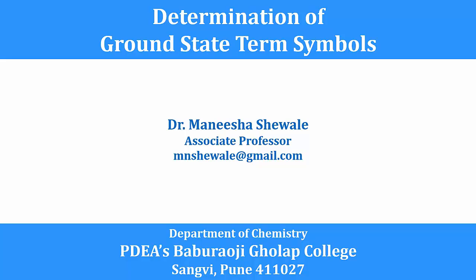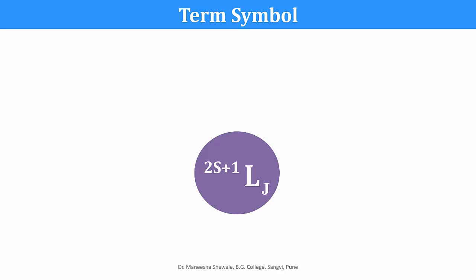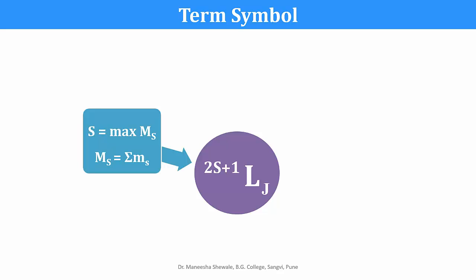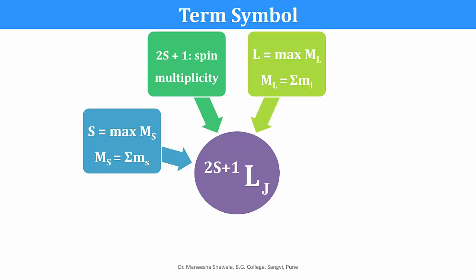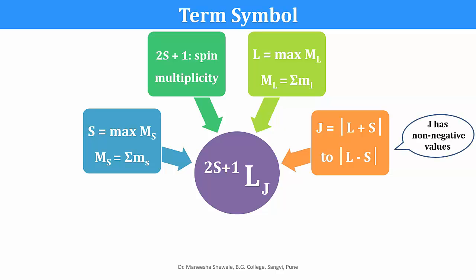In this video we will learn how to determine the ground state term symbols. A term symbol is represented as 2S+1LJ, where S is the total spin angular momentum quantum number — it is the maximum value of MS obtained by adding the spin quantum numbers. 2S+1 is the spin multiplicity. L is the total orbital angular momentum quantum number, the maximum value of ML obtained by adding the magnetic quantum numbers. J is the total angular momentum quantum number; the allowed values of J are from the maximum L+S to the minimum |L−S|, so J has non-negative values.